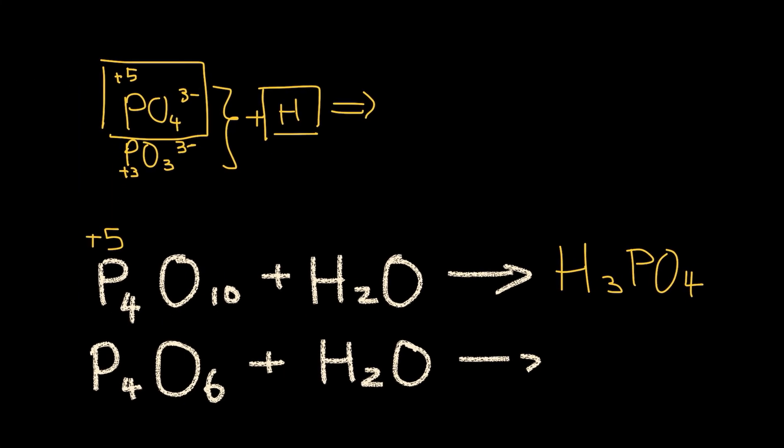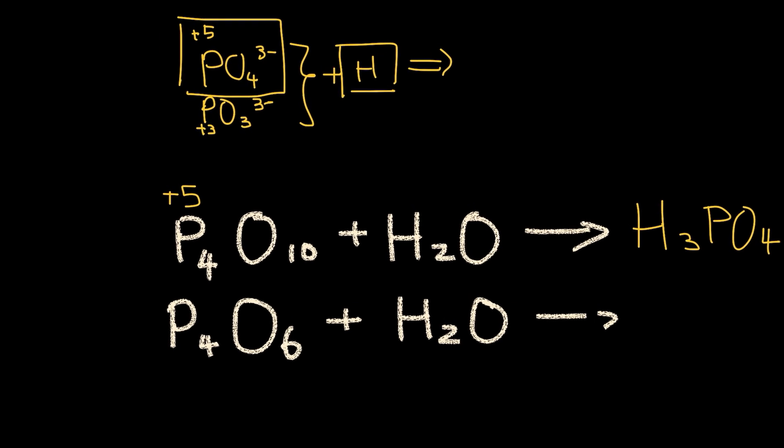What about the next one? Oxygen has 6 of them times negative 2. That will give us an oxidation number of negative 12. Then P here has to be positive 3 in order to balance out the negative 12. 3 times 4 makes positive 12.